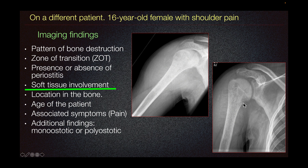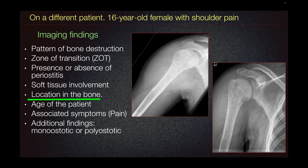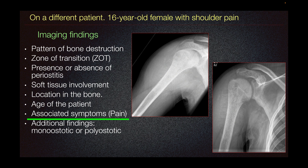The other thing that we look at is soft tissue involvement. In this case, we can see cortical destruction in the right humeral neck with an associated soft tissue component — all signs of an aggressive lesion. We also look at the location in the bone, whether it's epiphysis, metaphysis, or diaphysis, and whether it's axial or appendicular skeleton, as well as the age of the patient, since some malignancies only occur in children and some in adults. Associated symptoms such as night pain are associated with an aggressive lesion, and we look at the distribution — whether monostotic or polyostotic.